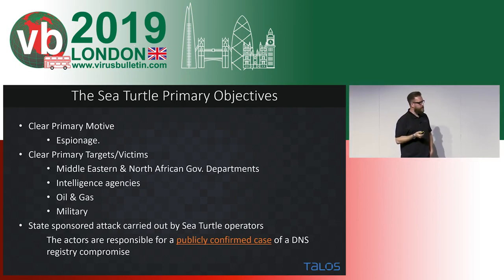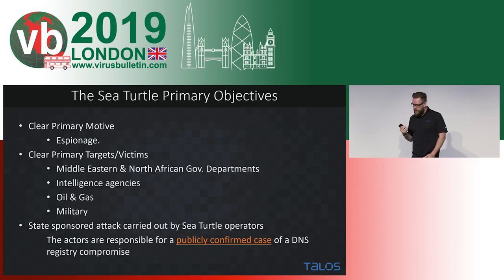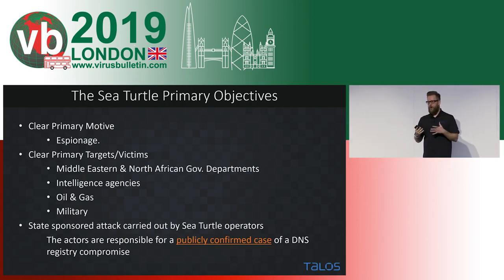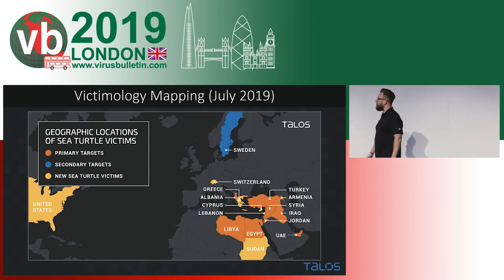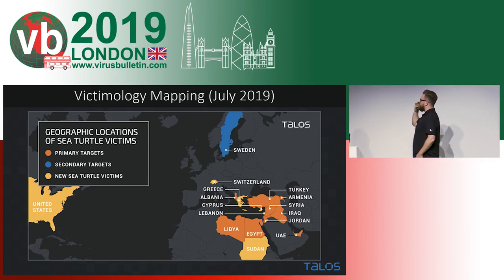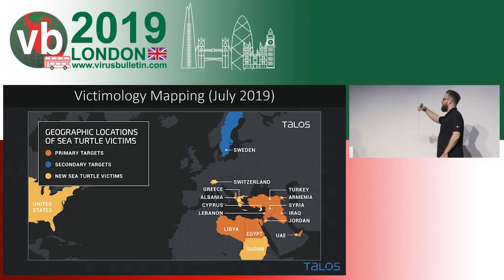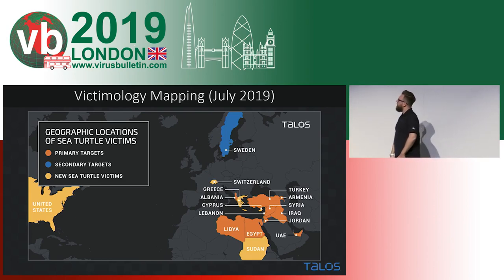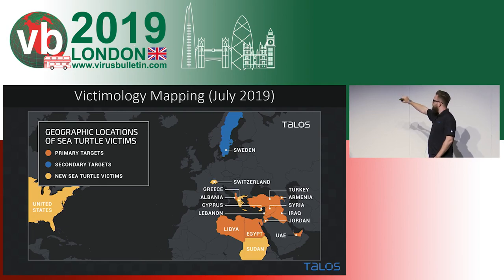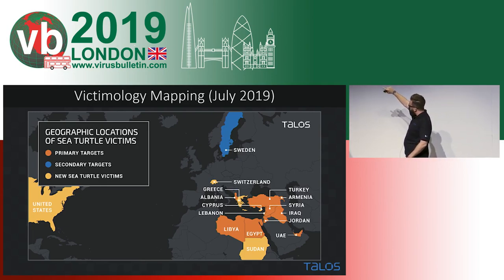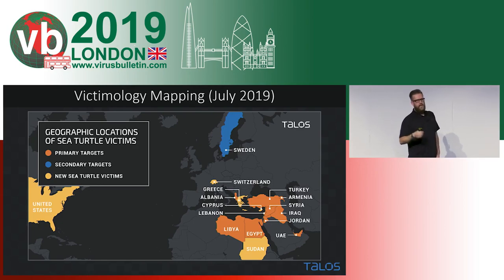Sea Turtle is believed to be a state-sponsored attack. The first publicly confirmed case of a DNS registry compromise was NetNod in Sweden — they released a post in January 2019 saying they'd been hit by a wave of DNS redirection and targeted DNS attacks, which we linked back to Sea Turtle. As of July 2019, victimology includes primary and secondary targets, with new Sea Turtle victims identified in Switzerland, Greece, and Sudan — again public sector, government entities, intelligence agencies, and an airport.